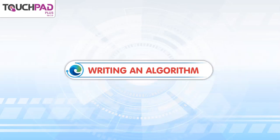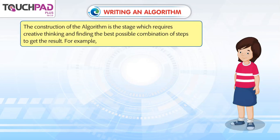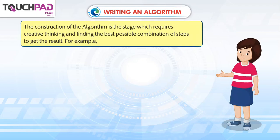Writing an algorithm. The construction of the algorithm is the stage which requires creative thinking and finding the best possible combination of steps to get the result. For example: